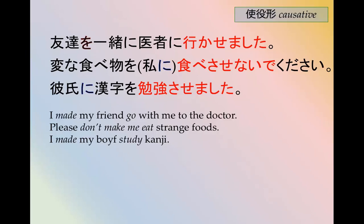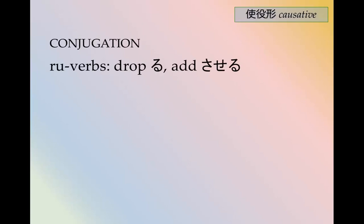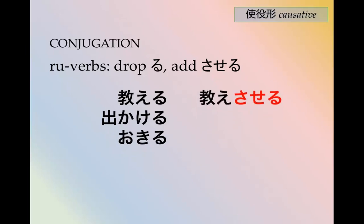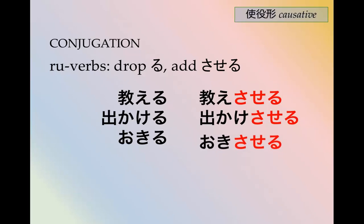The causative form often means to make someone do something, although it can also mean to let someone do something — we'll look at that a little bit more. Conjugation is fairly straightforward. For ru-verbs, you drop る and add させる. So おしえる becomes おしえさせる。 でかける becomes でかけさせる。 おきる becomes おきさせる。